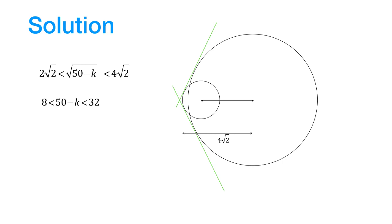Let us subtract 50 from the three terms in this inequality to get this. Now changing the sign of all the terms we find that k is between 18 and 42, and we can write down this inequality in this form. Therefore the correct answer is option B.